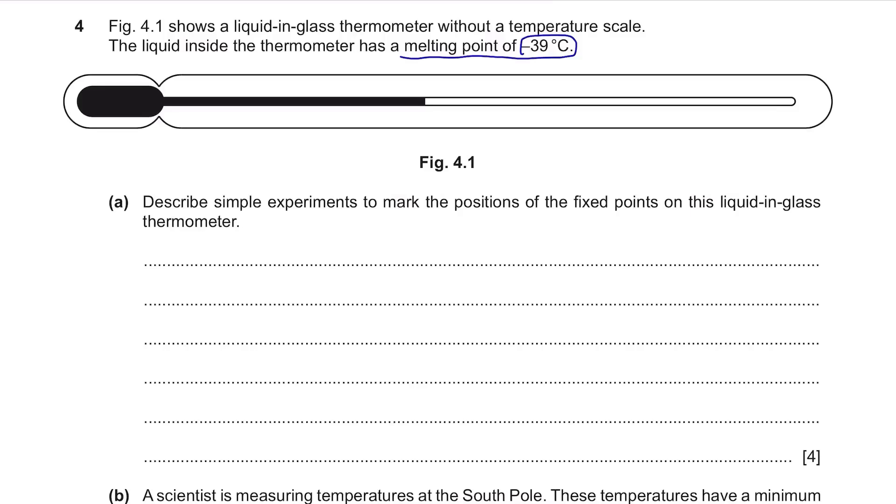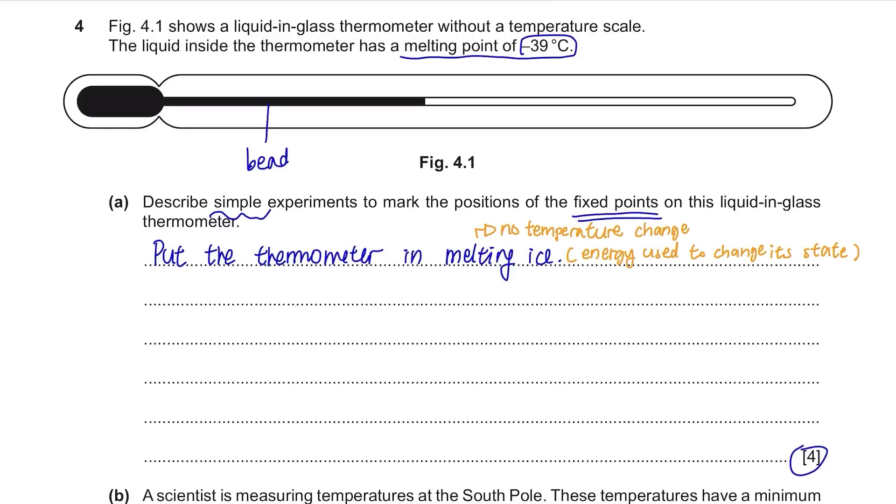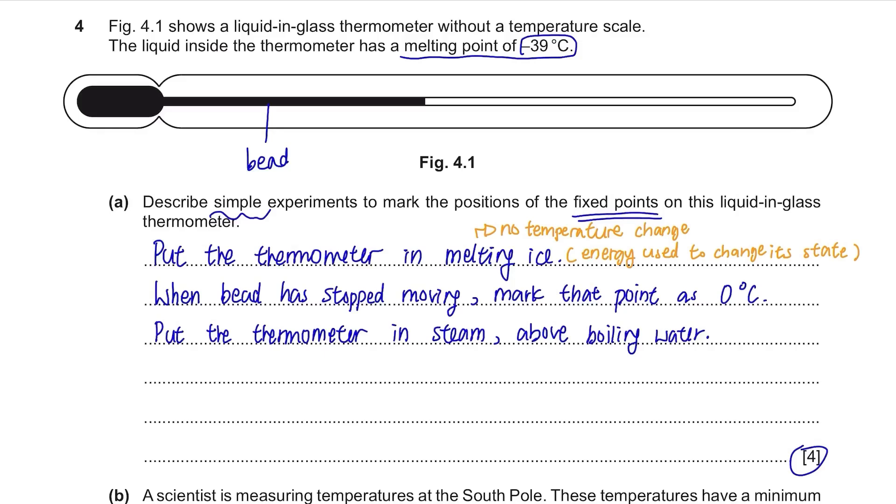Part A. Describe simple experiments to mark the positions of the fixed points on this liquid in glass thermometer. It says simple but it's a formal question so you know that your explanation shouldn't be simple. To scale a liquid in glass thermometer, there are fixed steps for this. First, put it in melting ice. You'll see a point where the liquid inside the thermometer, it's called bead, stops moving. Remember, there is no temperature change in melting ice because all energy is used up to change its state. So when bead inside the thermometer stops moving, it means it has reached the melting point and mark that point as 0 degrees Celsius. Then put it in steam above boiling water. Again, the bead inside the thermometer will stop moving. It's water's boiling point where there is no temperature change. So mark that point as 100 degrees Celsius.